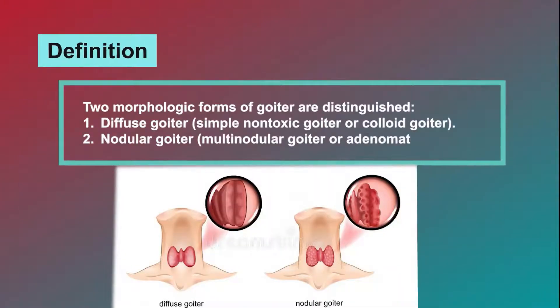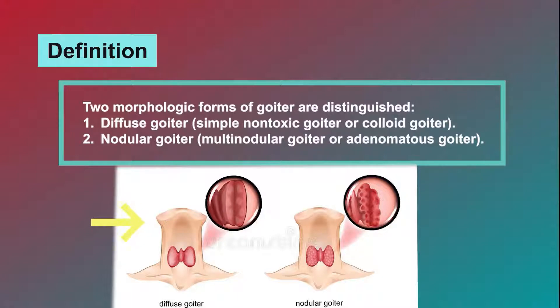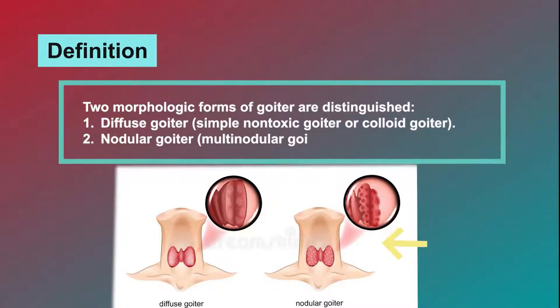Two morphologic forms of goiter are distinguished. First, diffuse goiter, also called simple non-toxic goiter or colloid goiter. Second, nodular goiter, also called multinodular goiter or adenomatous goiter.